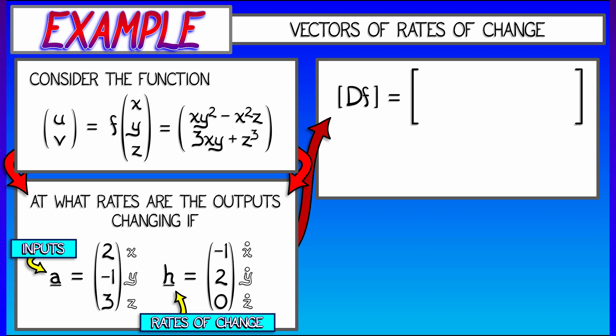Now, to solve this, we compute the derivative. Let's consider the partials with respect to x. That's y squared minus 2xz and 3y, respectively. Then the partials with respect to y are 2xy and then 3x. The partials with respect to z are minus x squared and 3z squared.